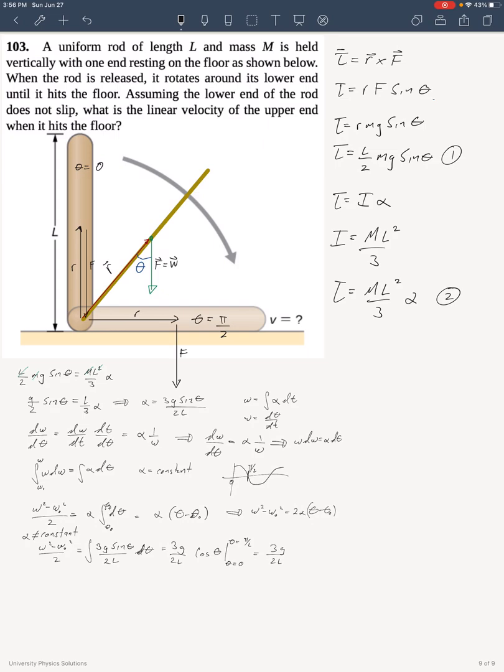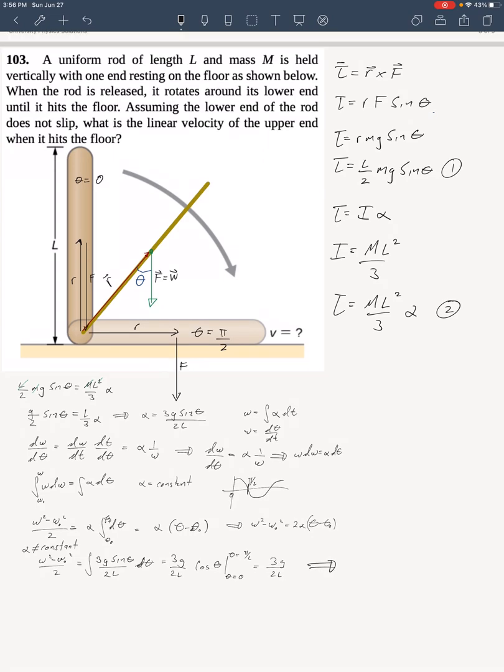All right, so what we have found is that omega squared minus omega zero squared divided by 2 is equal to 3g over 2L. Well, then that means that omega squared minus omega zero squared is equal to 3g over L because the 2s canceled. Now, I also know that my initial omega, omega zero, had to be equal to zero because the rod was not moving at that point. It wasn't thrown. It just simply started falling from rest.